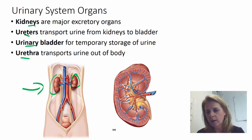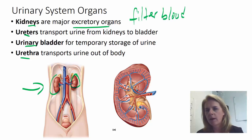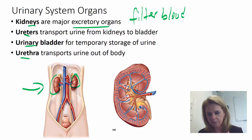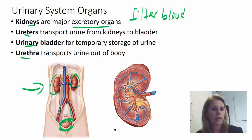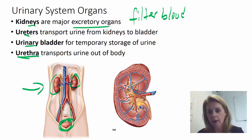Your kidneys are your major excretory organs — they're the ones that filter the blood and produce urine as a waste product. Once the kidneys filter the blood, that urine is then transported from the kidneys to the bladder via the ureters. You have a right and left ureter, and they're just tubes that allow transport of urine from the kidney to the bladder. The bladder is a storage facility — it holds the urine until the bladder is full and it's a socially appropriate time to allow that urine to exit the body through the urethra.